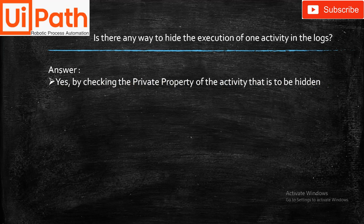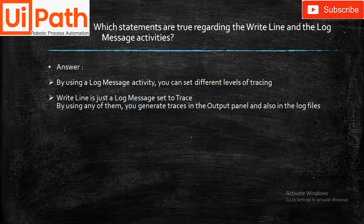Which statements are true regarding the Write Line and the Log Message activities? The answer is: by using a Log Message activity we can set different levels of tracing. Write Line is just a Log Message set to trace. By using either of them, we generate traces in the output panel and also in the log files.